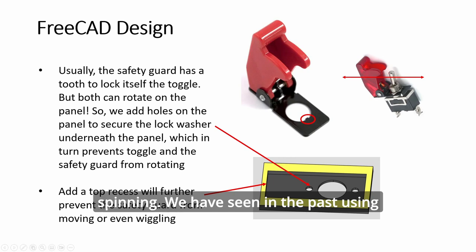We have seen in the past using the locking hole, the locking ring with the hole to hold it to the panel. If you add this without the locking hole, the toggle guard, this plate with the groove here, the teeth, the tooth here can also secure the toggle.